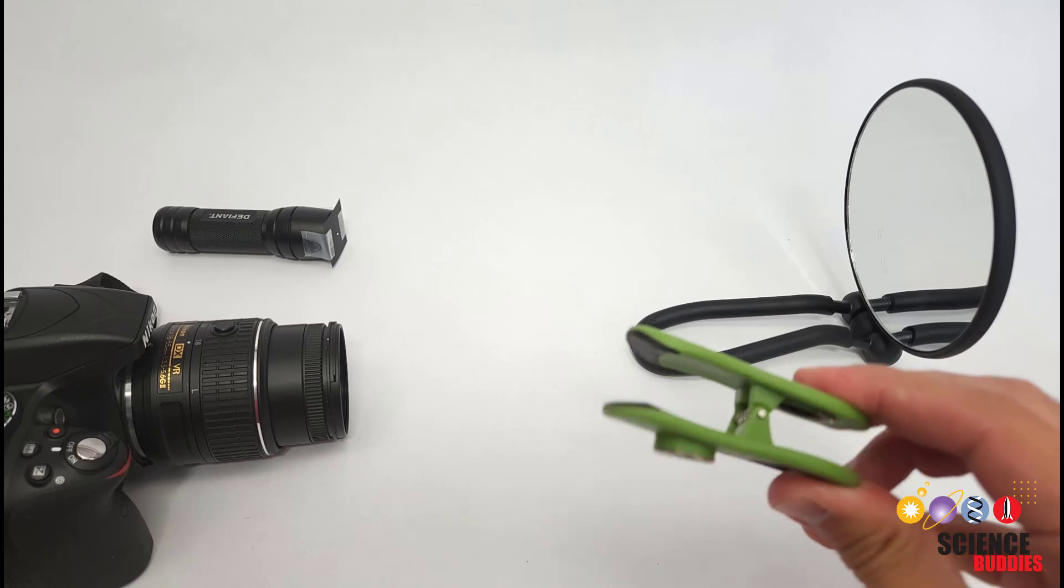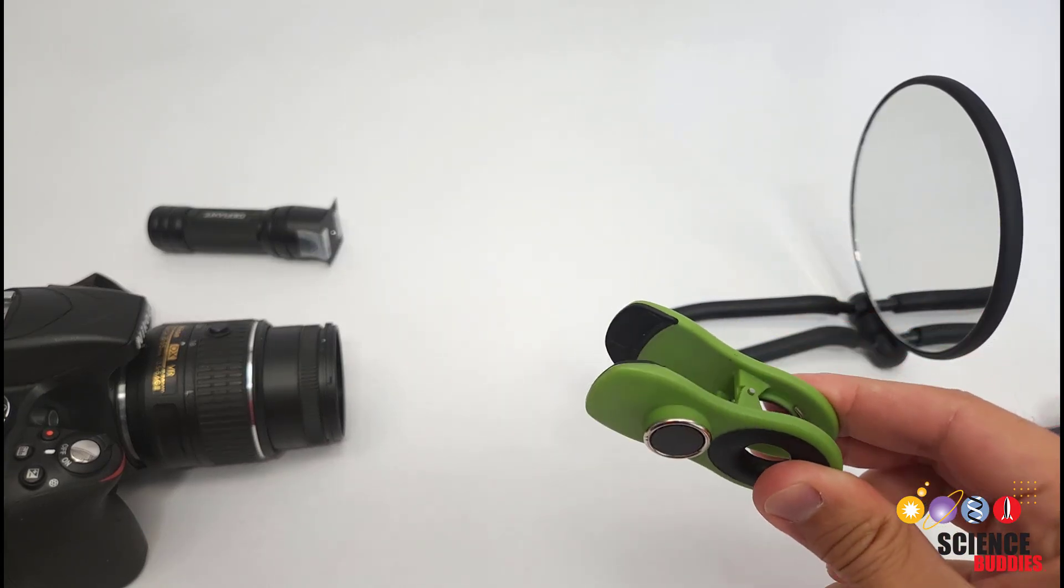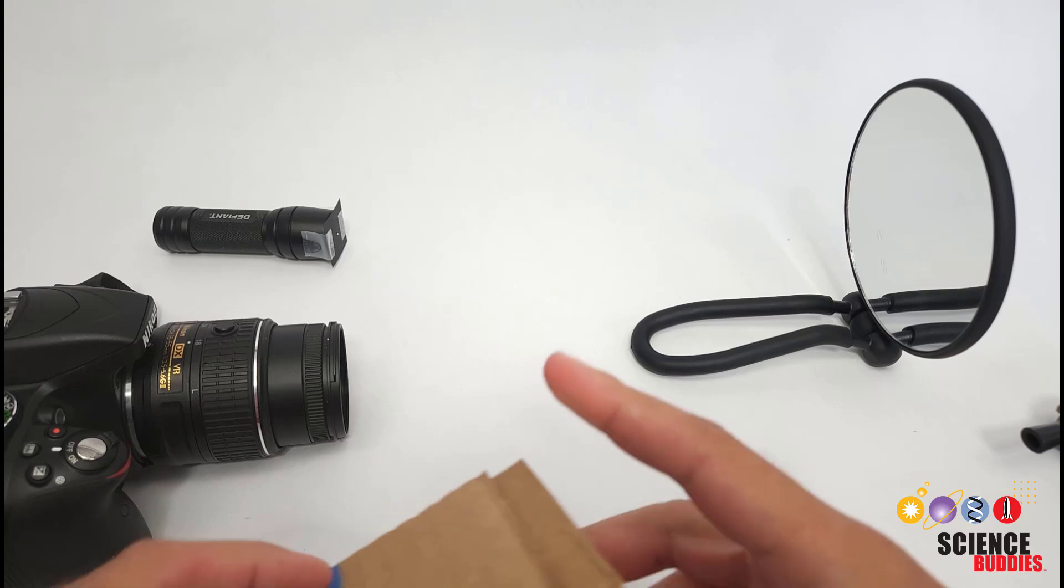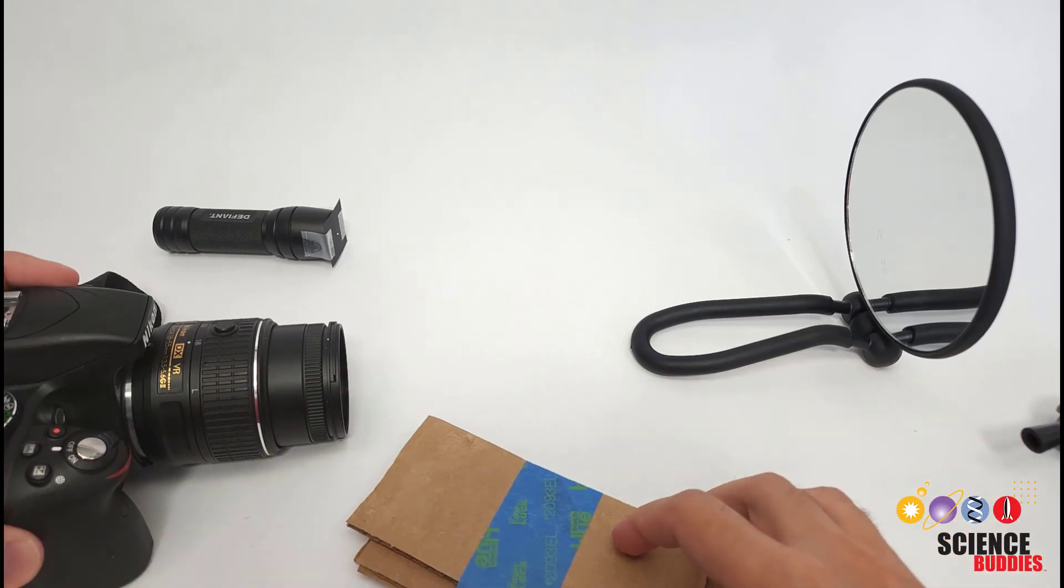You can use stuff you just have around the house, for example, like one of these little potato chip bag clips to hold onto something or even just pieces of cardboard to prop something else.